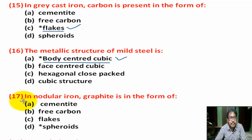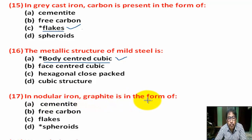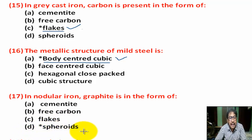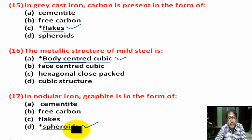Question number 17: In nodular iron, graphite is in the form of — Option A: cementite. Option B: free carbon. Option C: flakes. Option D: spheroid. Correct answer is Option D — spheroid.